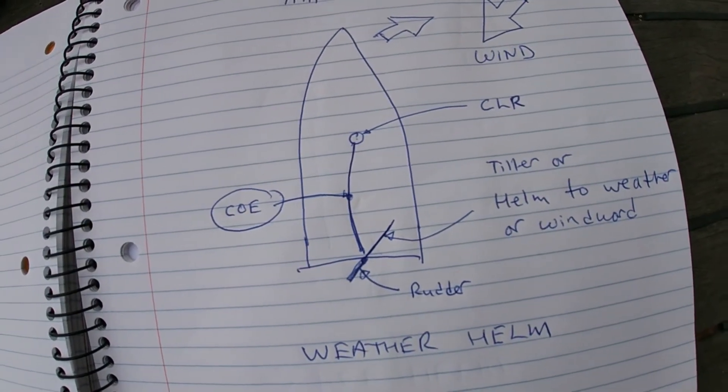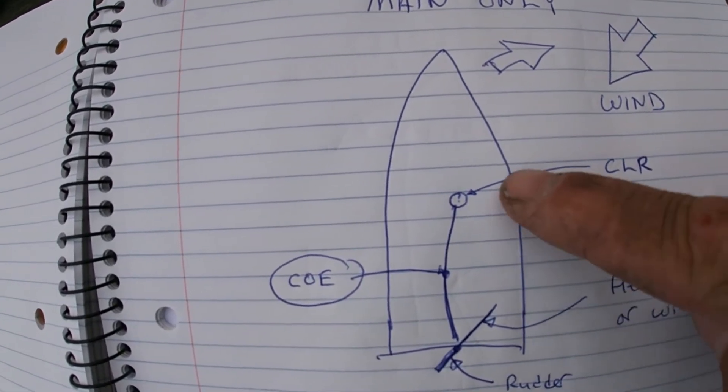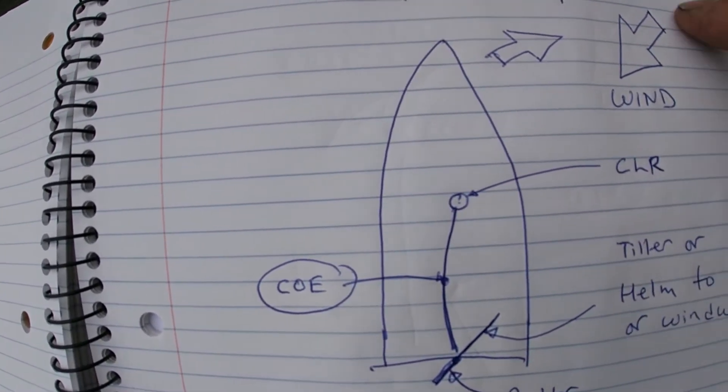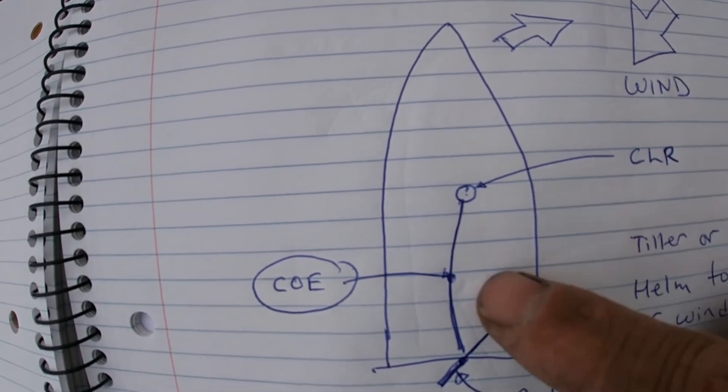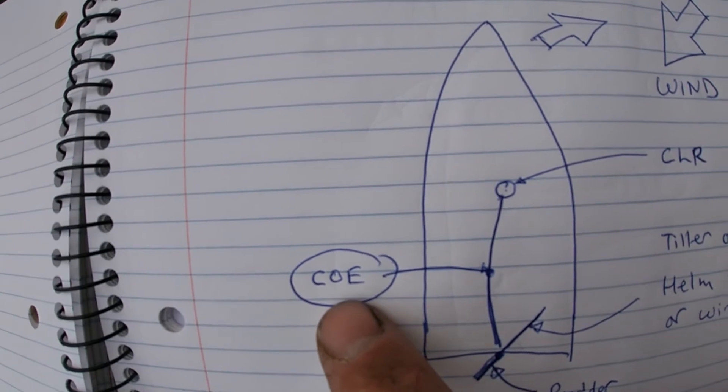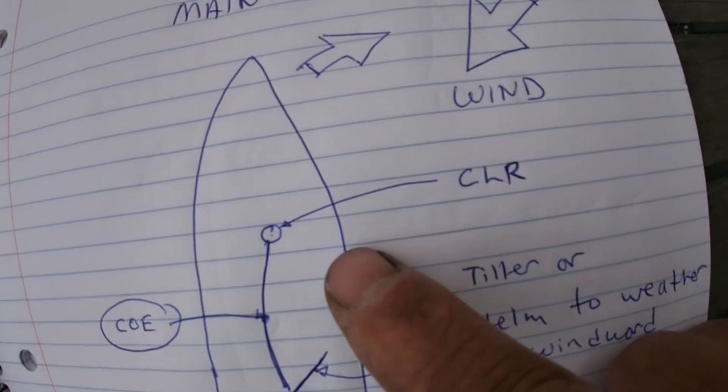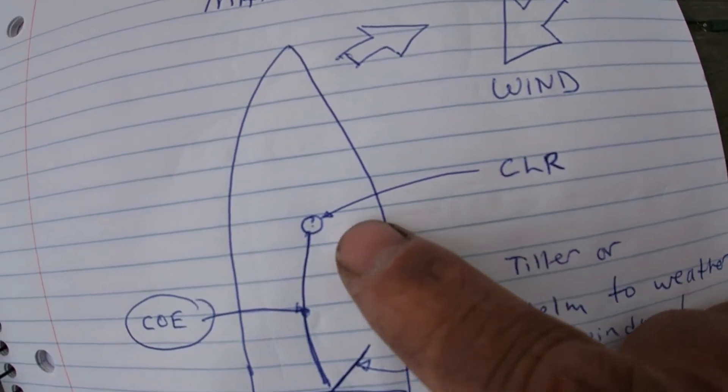So conversely, if we've only got the main up, then we've got the wind coming at a 45-degree angle. And here's the mainsail right here. And I've marked the center of effort and effectively the center of lateral resistance shown here.